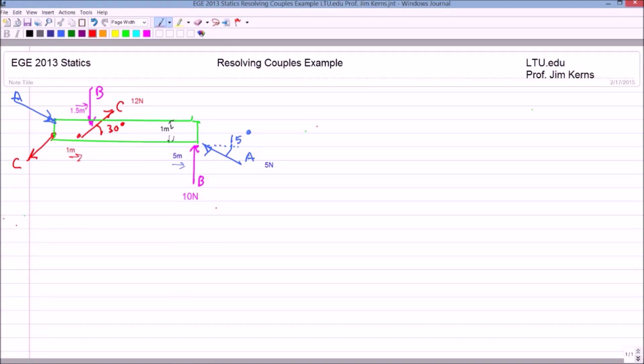Now recall that a couple results when you have a pair of forces that are parallel, non-collinear, and opposite direction, equal magnitude. So by inspection, we can see that there's no net force in either the x or the y direction, and obviously not in the z direction.